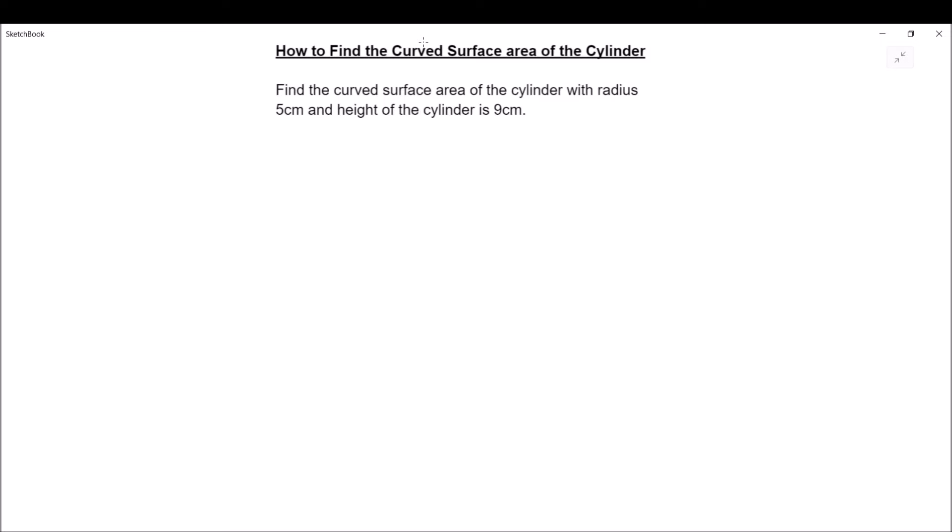The formula we are going to use is curved surface area equals 2 times pi times r times h, where r is the radius of the cylinder and h is the height of the cylinder.